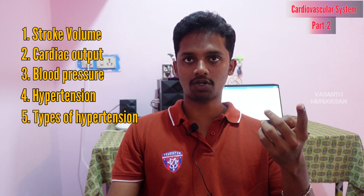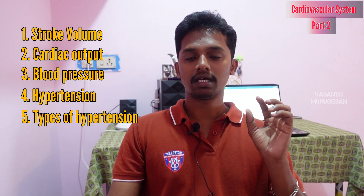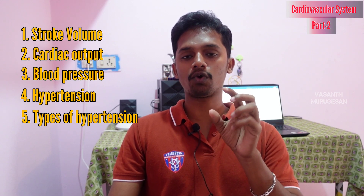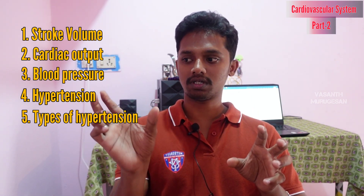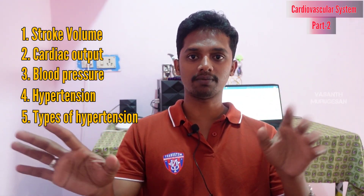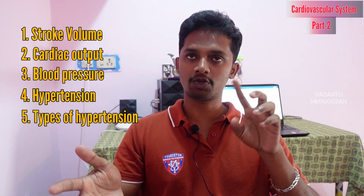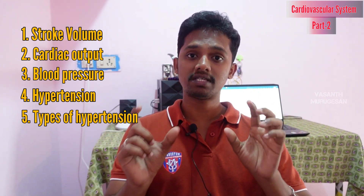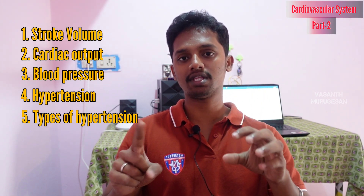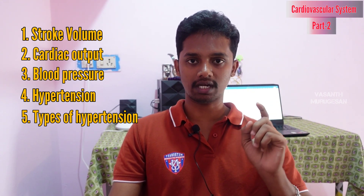Let's begin with the first topic: stroke volume. Stroke volume is the amount of blood ejected by each ventricle in a single heartbeat. If you look at the right ventricle and the left ventricle, stroke volume refers to the amount of blood ejected by each ventricle per heartbeat.